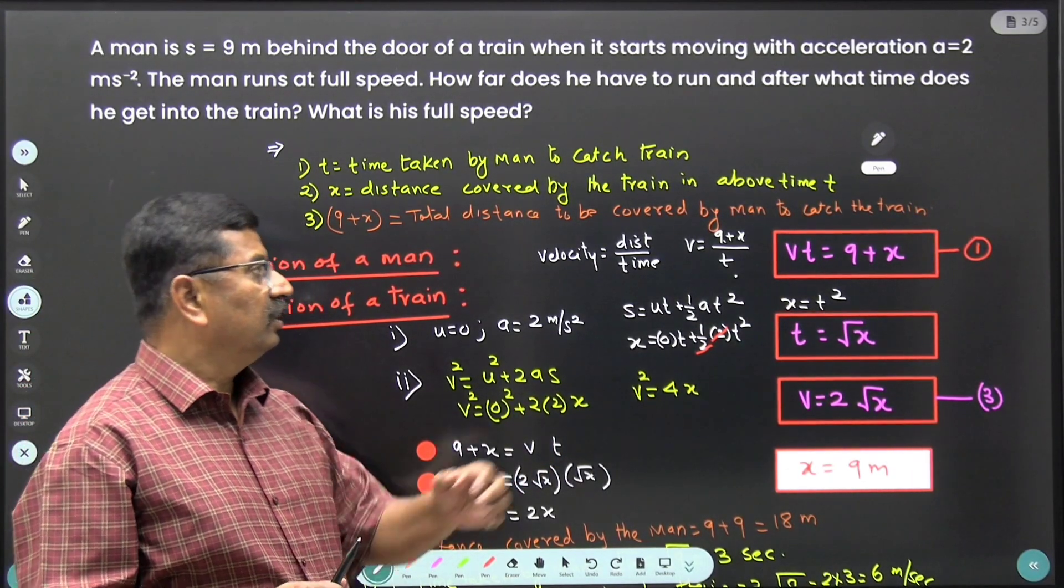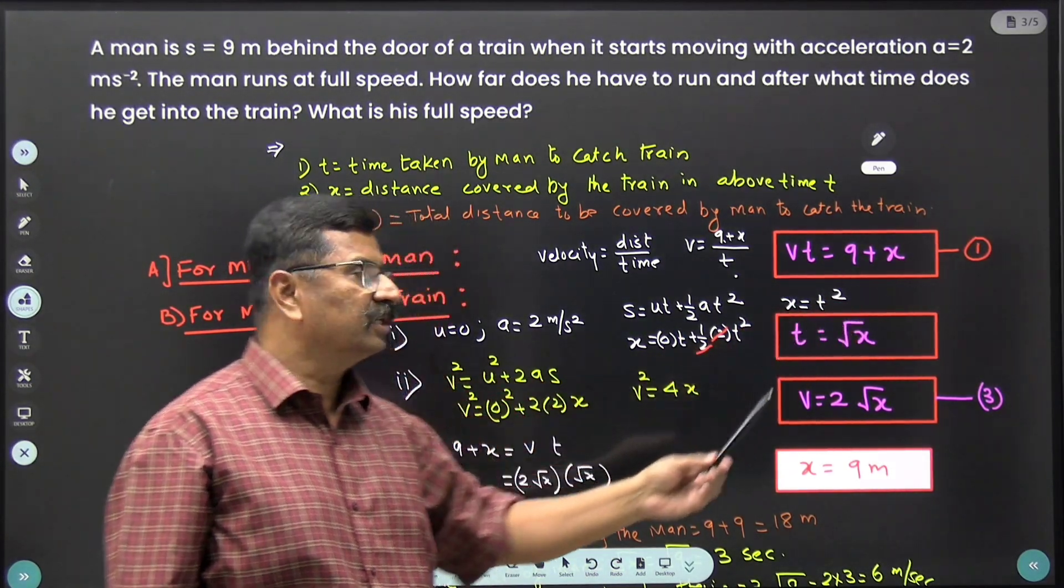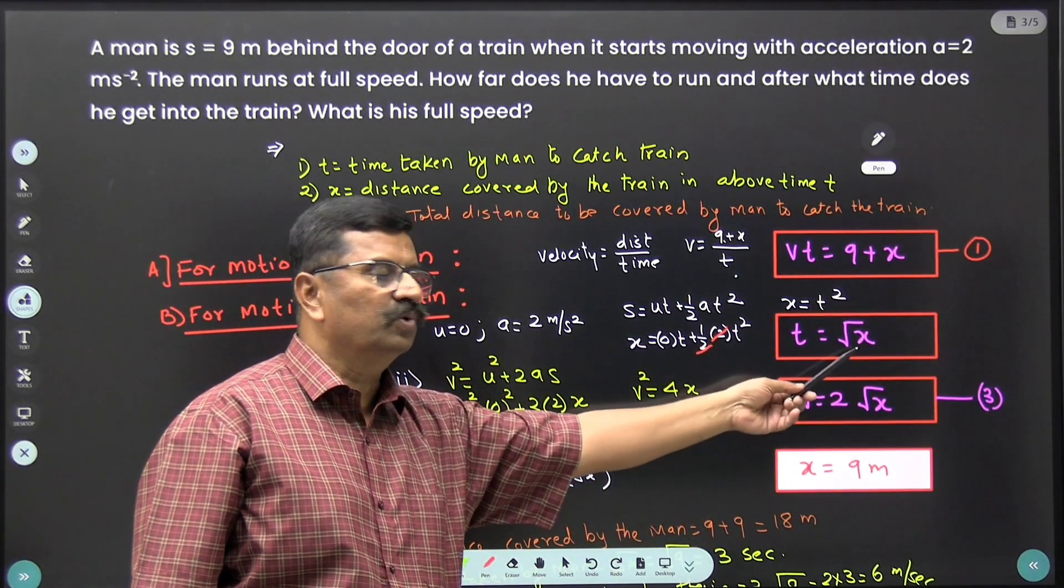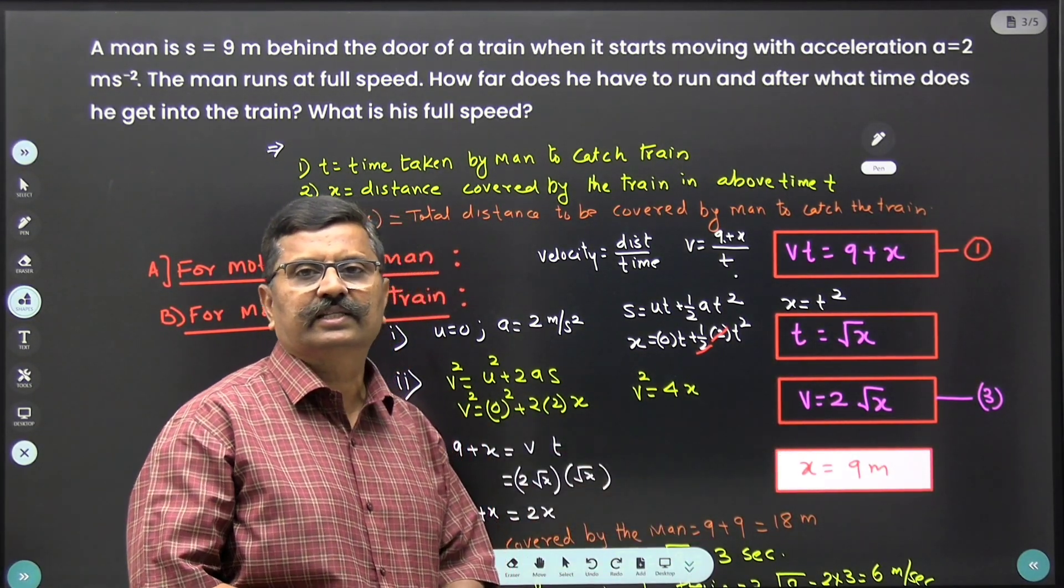Now we have three equations. First equation 1, vt is equal to 9 plus x. Equation 2, t is equal to root x. Equation 3, v is equal to 2 root x.